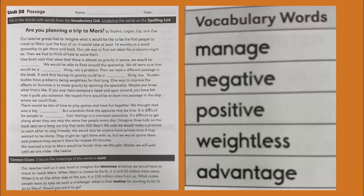Here's the passage for today. Are you planning a trip to Mars? So you're going to fill in the blank with the vocabulary word and underline the word on the spelling list. Our science group had to imagine what it would be like to be the first people to travel to Mars. Just the four of us. It would take at least 16 months and a small spaceship to get there and back.